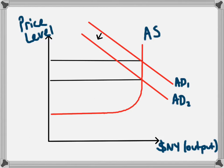The contractionary fiscal policy has led to a decrease in aggregate demand as a result of a decrease in government spending from AD1 to AD2. We haven't had a change in the level of national income — in both cases we're still at the full employment level of national income, so all the resources of the economy are being used. But we are experiencing a decrease in the price level as a result of the decreased demand from government spending.